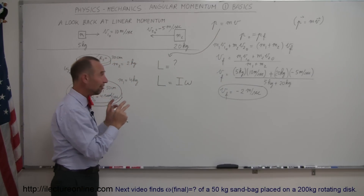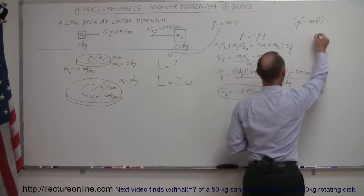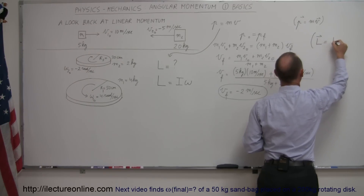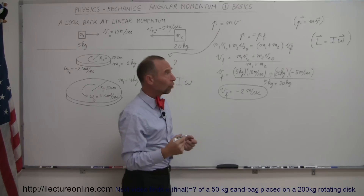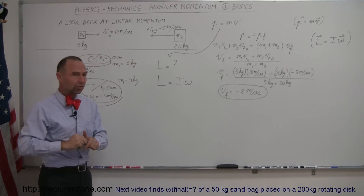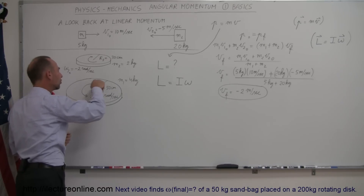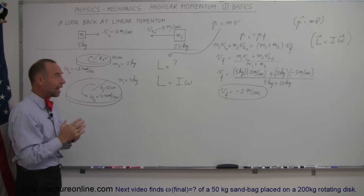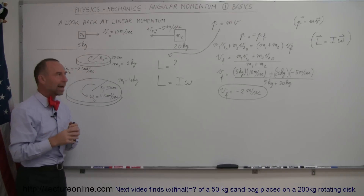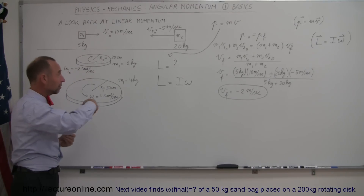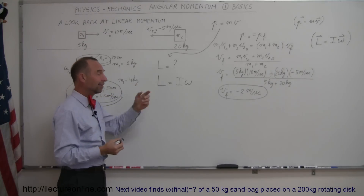Angular momentum is a vector quantity, so we write L as a vector: L equals I times omega, where omega is the angular velocity, also a vector because it's directional. By definition, if something rotates counterclockwise we call that a positive angular velocity; if something rotates clockwise we call that a negative angular velocity. So it does have direction, and therefore L is written as a vector quantity.